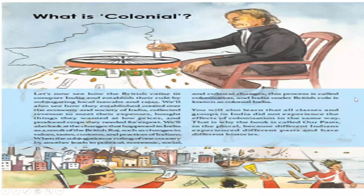Welcome back to the discussion of chapter number one: History, How, When and Where. In the previous video, we talked about what colonial means and how important administrative records are to recreate or trace the historical events which happened in our past. Today, we are going to discuss surveys and other official and non-official records. But before we jump into today's discussion, I wanted to have a quick recap of what we have learned previously.